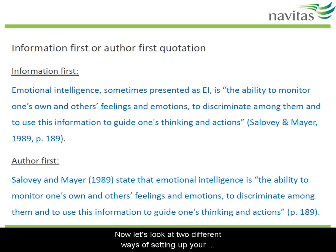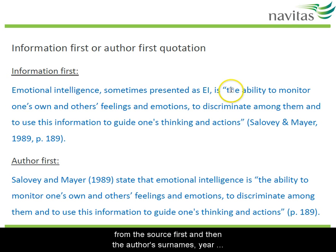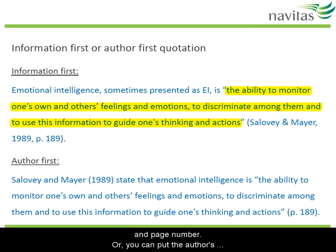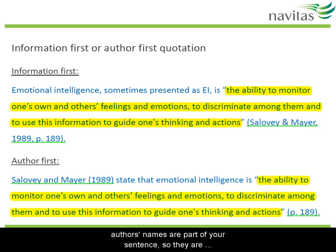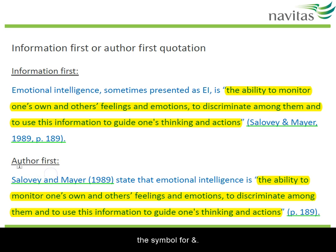Now let's look at two different ways of setting up your in-text referencing. You can put the information from the source first, and then the author's surnames, year and page number. Or you can put the author's names first, then the year. The page number in this case goes at the end of the quote. In the author-first format, the author's names are part of your sentence, so they're not in brackets, and you use the word 'and' rather than the symbol for and.